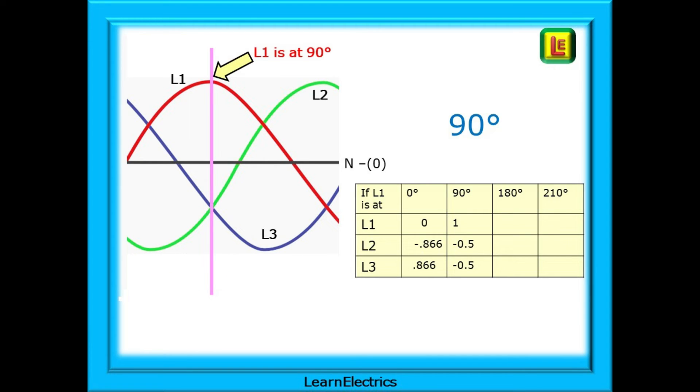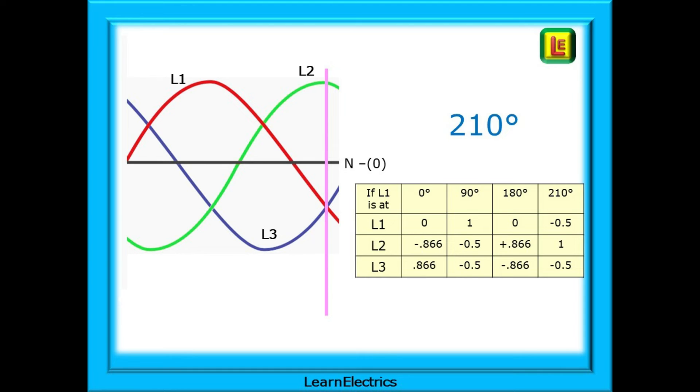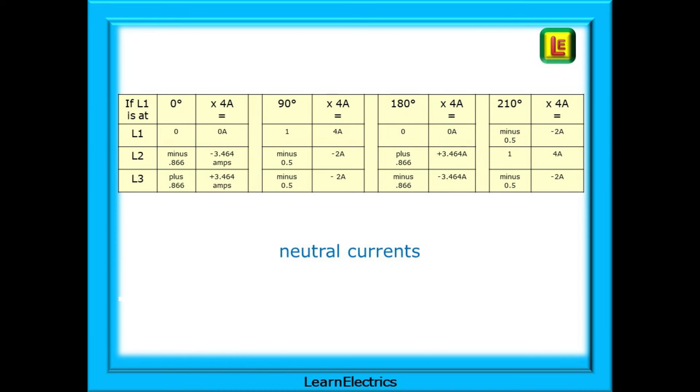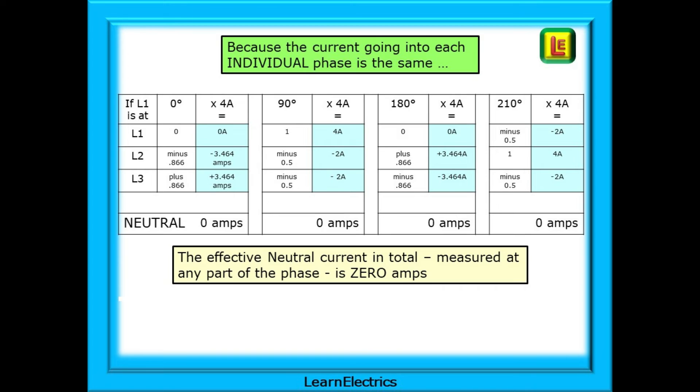Moving on a little bit, a few fractions of a second later, the lilac bar is at 90 degrees for L1 and L1 is at a maximum, a value of 100% or plus 1. The red and blue are both negative and are sat at minus times 0.5 for each. And these numbers can also be entered into the grid. At 180 degrees, things have changed again. And at 210 degrees, a different picture again. And we've completed the grid numbering for you. Shown here is a completed table to give you an idea of what is going on. As we are using the same 4 amp heaters, the multiplication factors have been applied to the 4 amp neutral currents already. If we take that table and add up all the neutral currents, what do we get?